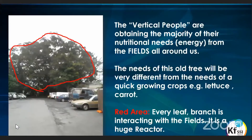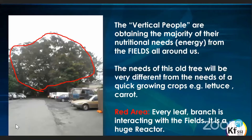Plants are obtaining the majority of their nutritional needs — what we call energy — from the fields all around them. The needs of this old tree will be very different to the needs of a quick-growing crop like lettuce, but essentially they are all the same. Every leaf and every branch is interacting with the fields, so the plant is just one huge reactor interacting with the fields around us.